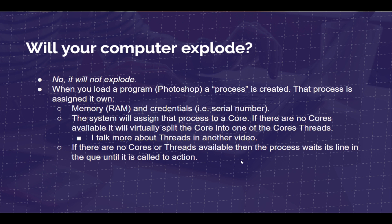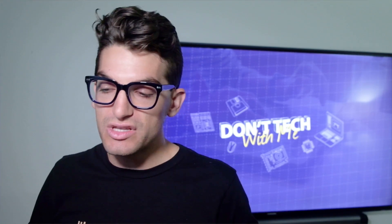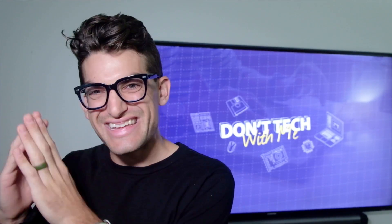Threads were developed after cores as a way to virtually divide a core to create more processing capacity. You'll see this in advertising as four cores/eight threads, eight cores/12 threads, or eight cores/16 threads. If there are no cores or threads available, the process waits in a queue until it is called to action. The CPU has an intelligent organization system: if it can't attribute a process to a core, it goes to a thread; if not a thread, it waits. If it's a non-essential task, it may cancel that process and move on to more important things.